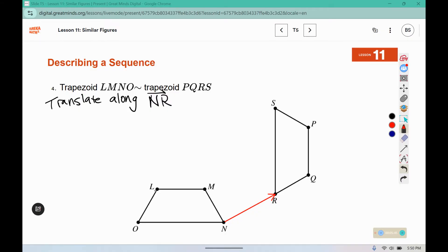So that moves this figure here along the vector. And then we notice that we needed to rotate. When we rotate, we need a center of rotation. So rotate around point R, and we need a direction, we're going to go clockwise. And we also need an angle measurement, so we're rotating clockwise 90 degrees.